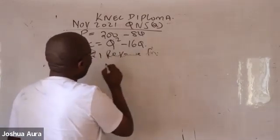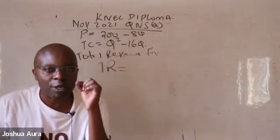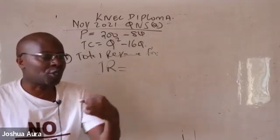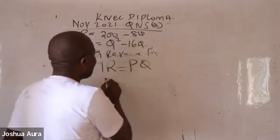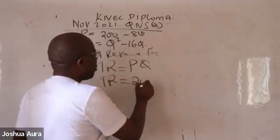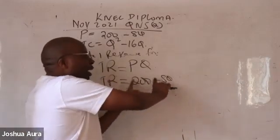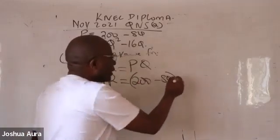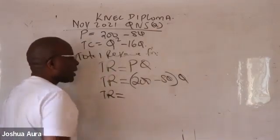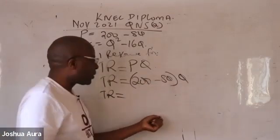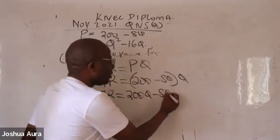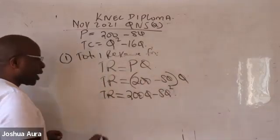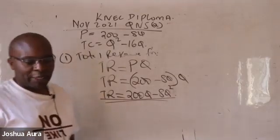The total revenue function — to get total revenue, we take price per unit times number of units sold. So total revenue is price times quantity. In this case, total revenue equals my price, which is (200 minus 8Q), multiplied by Q. Opening the brackets, Q is spread to each term, giving us 200Q minus 8Q squared. That is what we were supposed to do for part one of this question.